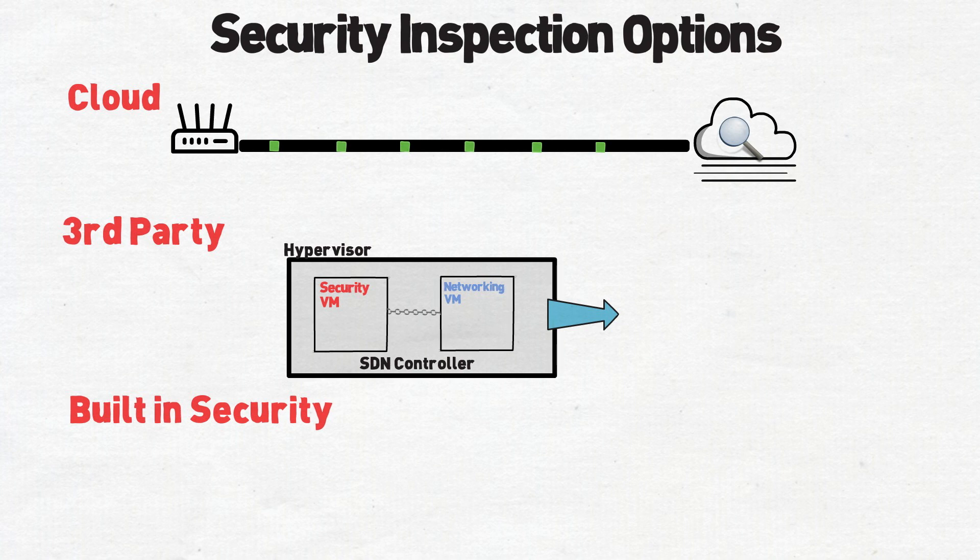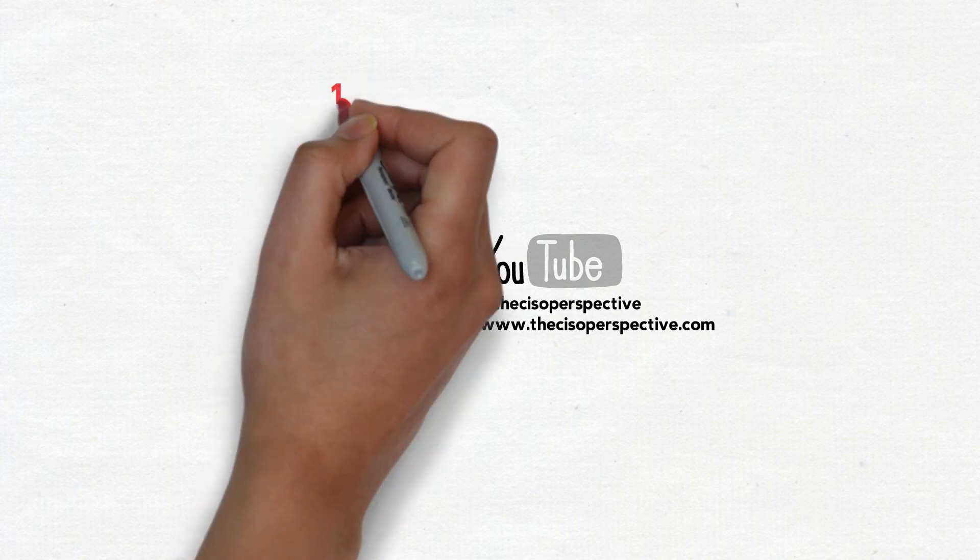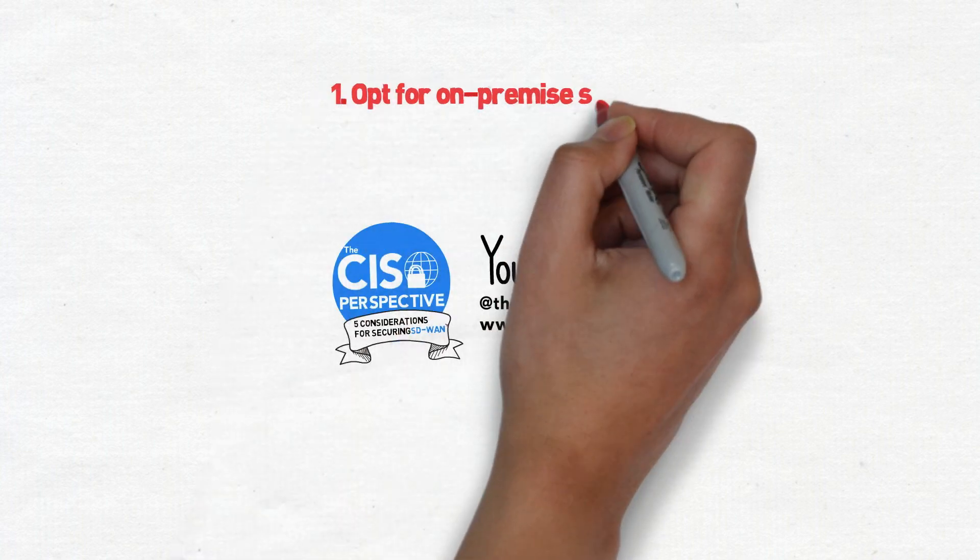Built-in security offering means a security inspection is happening in the SD-WAN appliance itself. These are generally traditional security devices like a UTM or next-gen firewall that have SD-WAN as a feature. All three options have their pros and cons, but from a security perspective, there's one option that you should only use as a last resort, and that leads us to the first item on our list.